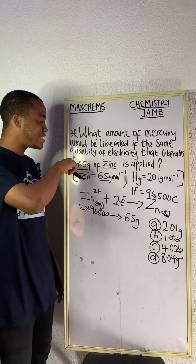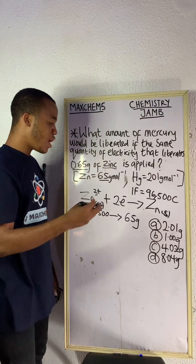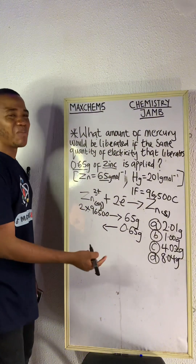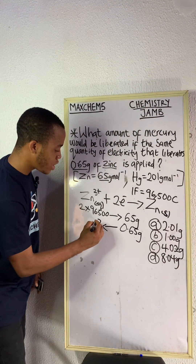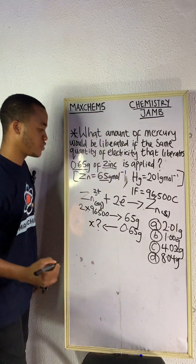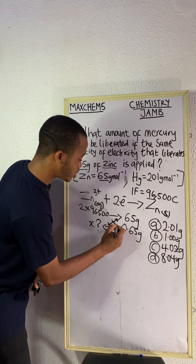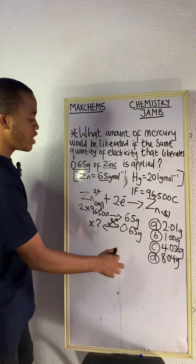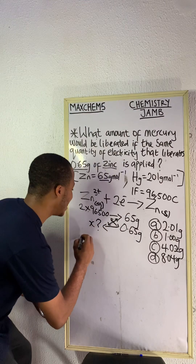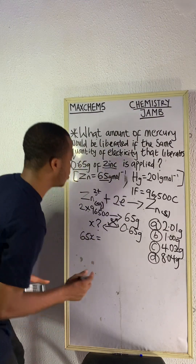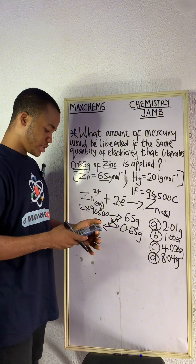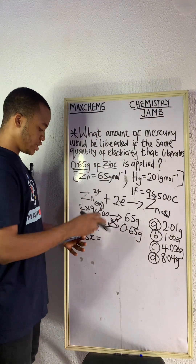In the question we are asked: what amount of electricity deposits 0.65 grams of zinc? So we write: 0.65 grams of zinc is going to be liberated by what amount of electricity — that is what we don't know, and that's what we want to calculate first before we calculate the amount of mercury. Let us represent this unknown with x. If we cross-multiply, x multiplies 65 and 0.65 multiplies 2 × 96,500.